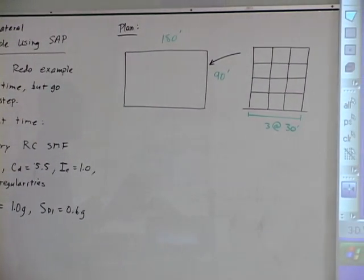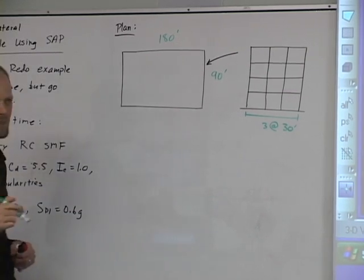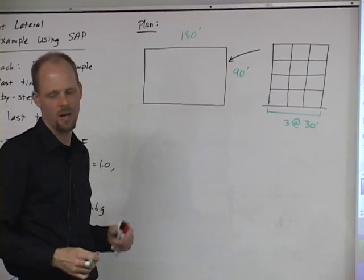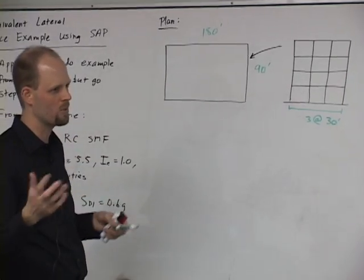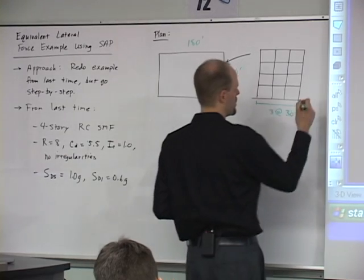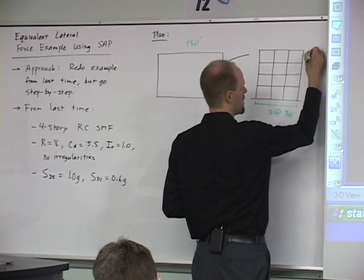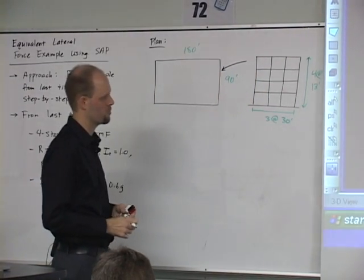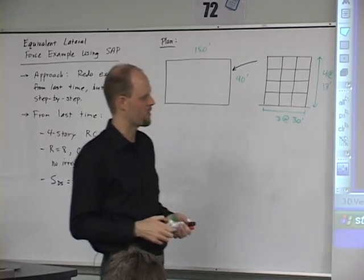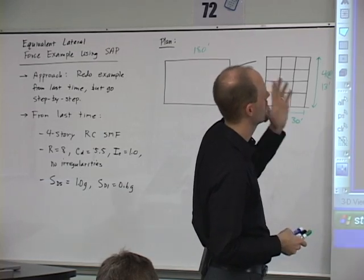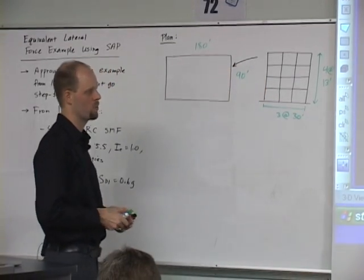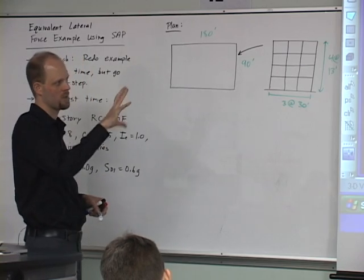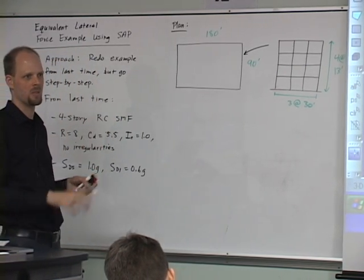For purposes of the example today, we're just going to do 13-foot story heights, because to actually move the stuff it's really kind of annoying in SAP. If you play around with it you'll be able to figure out how to do it — you can select nodes and move them. But for purposes of this example, four at 13 feet for simplicity. If you want to move it, you select the nodes and move them down two feet to make the bottom story 15 feet. Or instead of using their template, you could draw things yourself, but it's easier to use their template and move the nodes down.